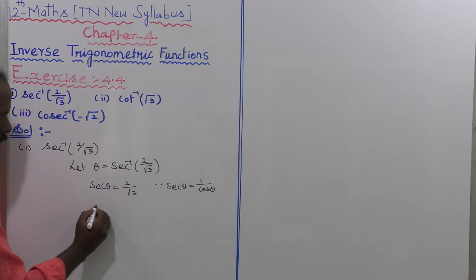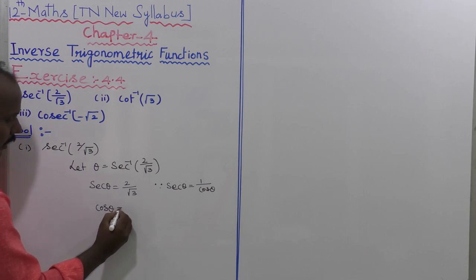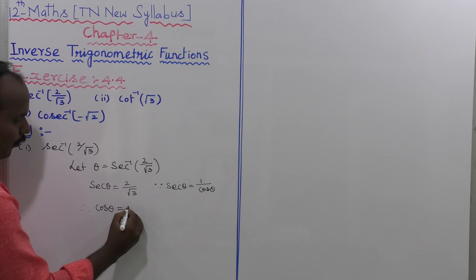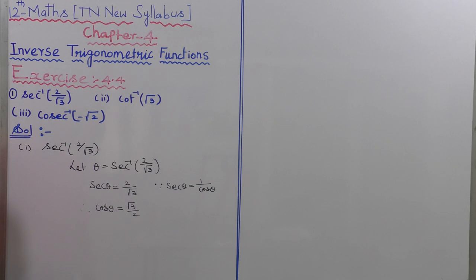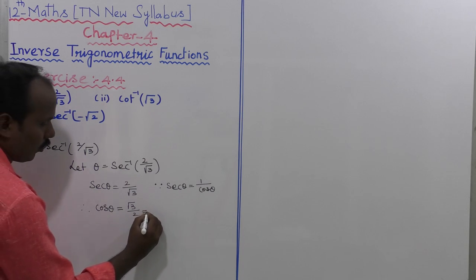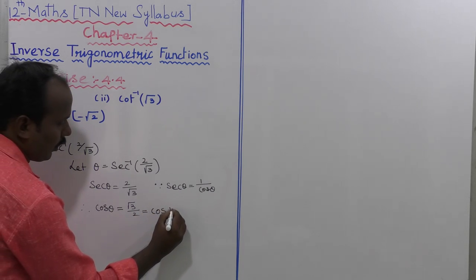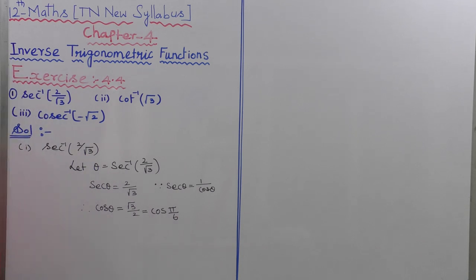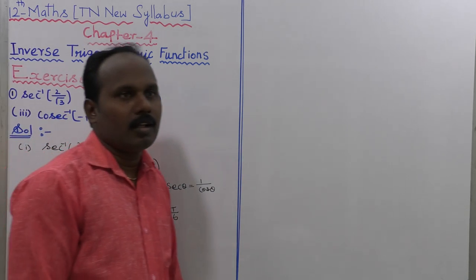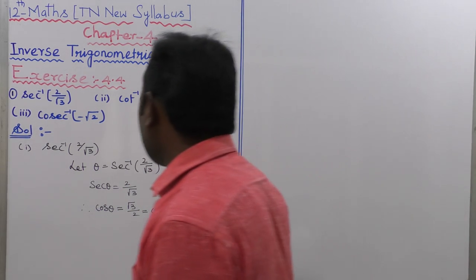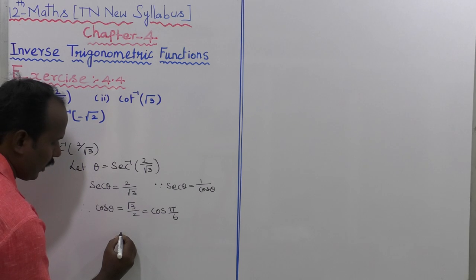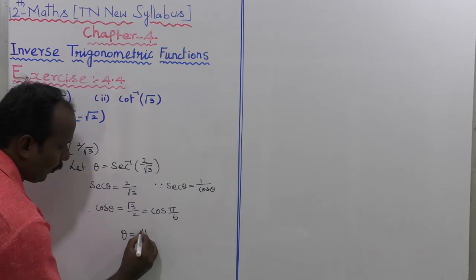...cos theta equals 1 by secant theta, which gives cos theta equal to root 3 divided by 2. Now cos theta equals root 3 divided by 2, which equals cos of pi by 6 — that is cos 30 degrees equals root 3 divided by 2. So theta equals pi by 6.